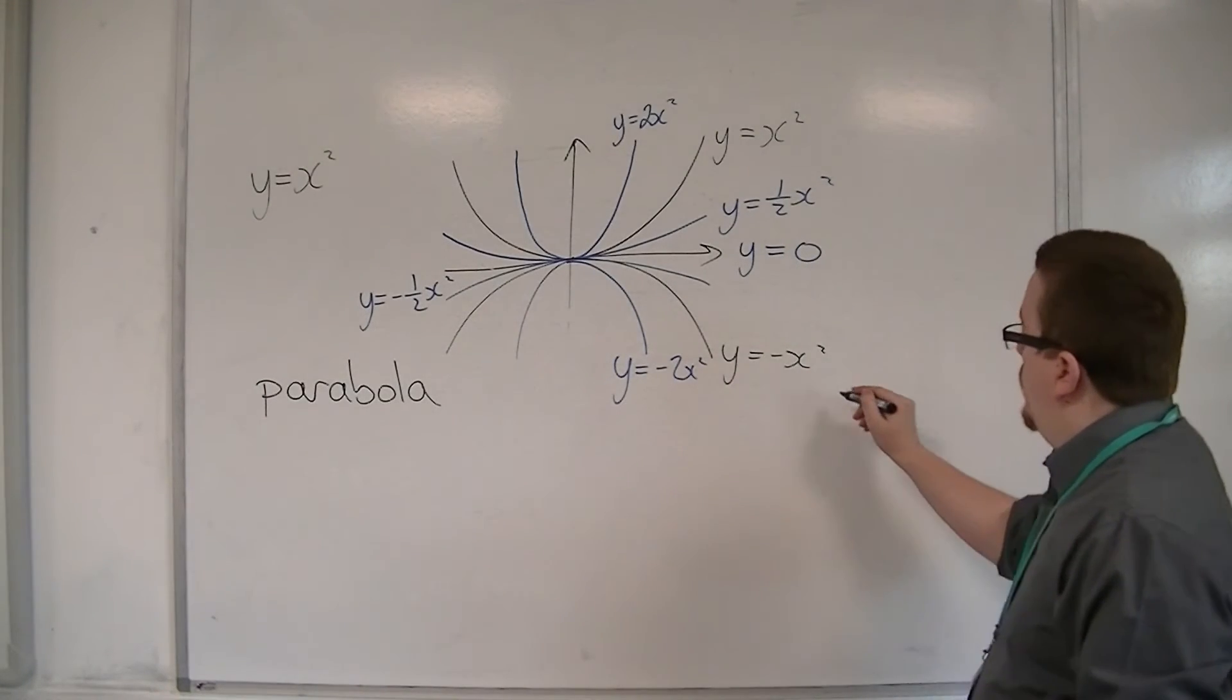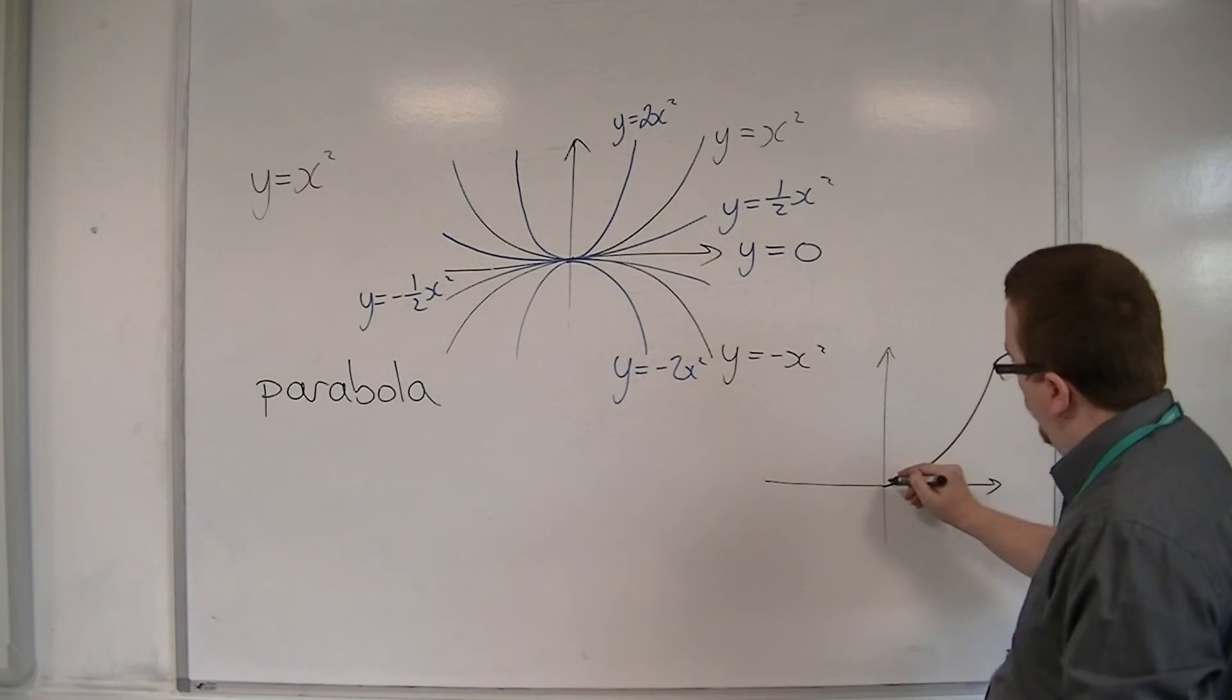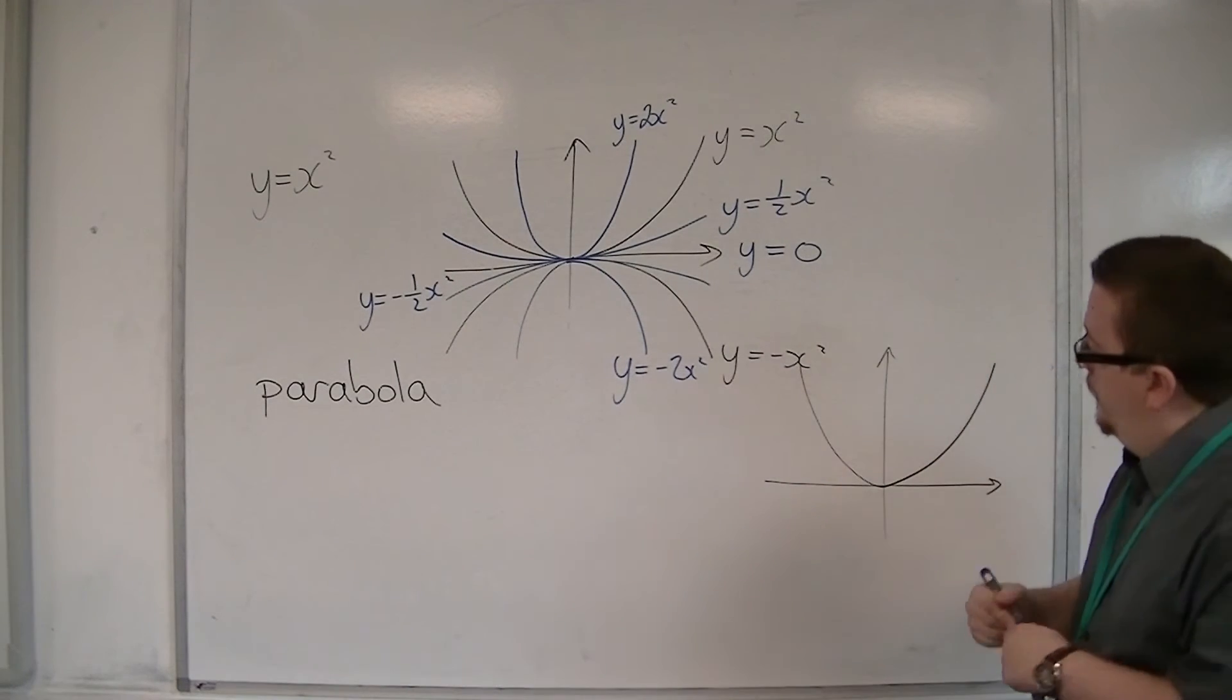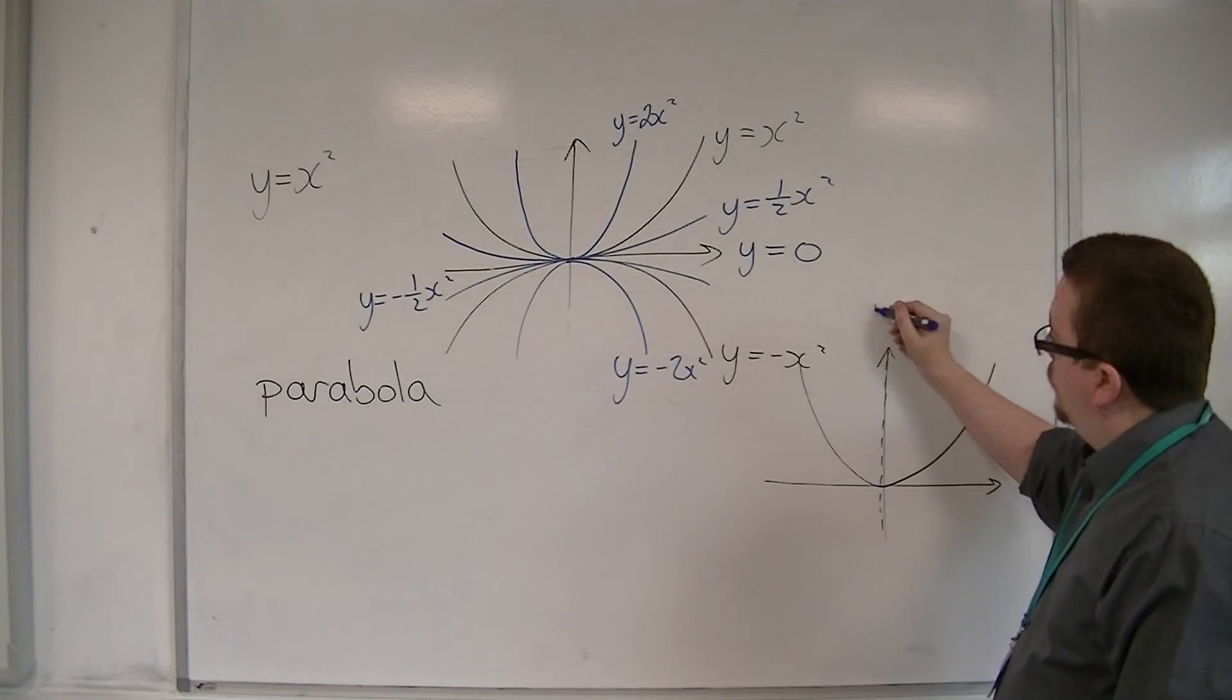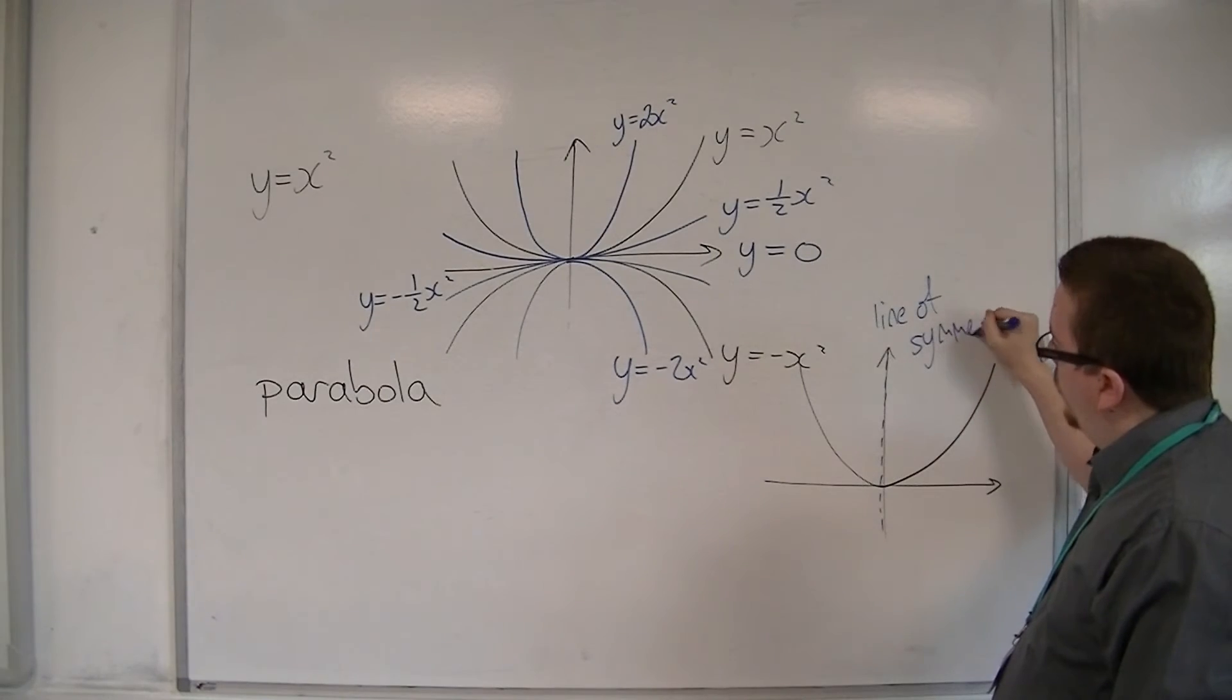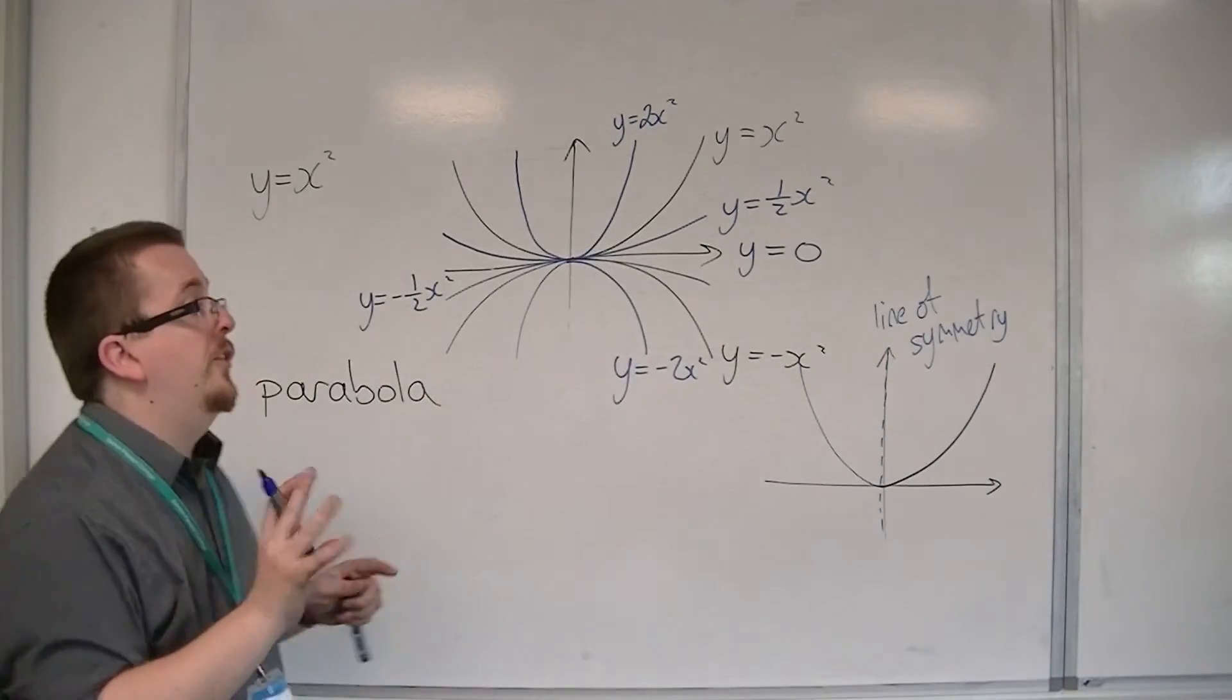Now, because we have that y equals x squared, and they are all of the same type of shape, they all have this line of symmetry going through the middle, which is very useful to know because that will enable us to solve different types of problems.